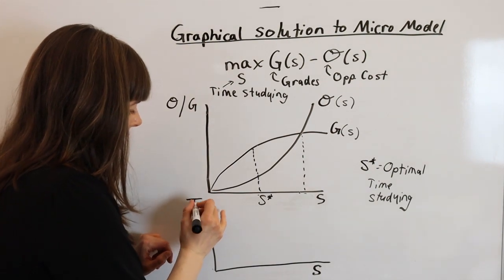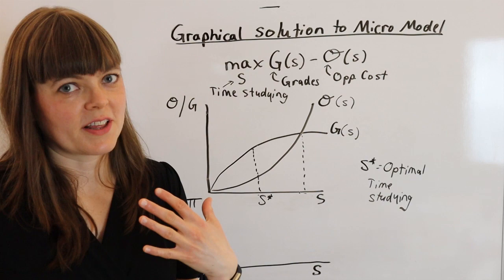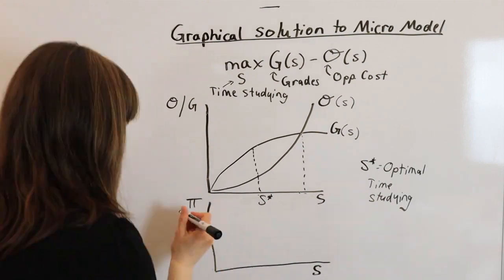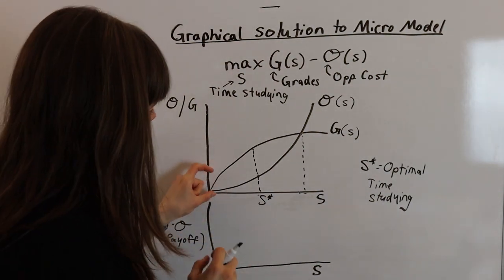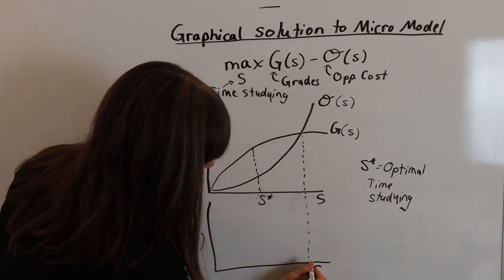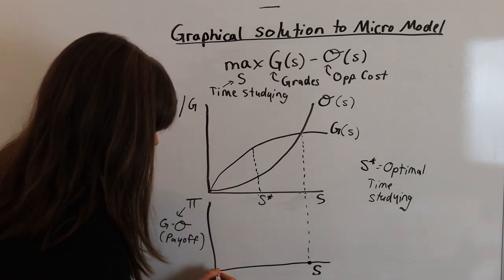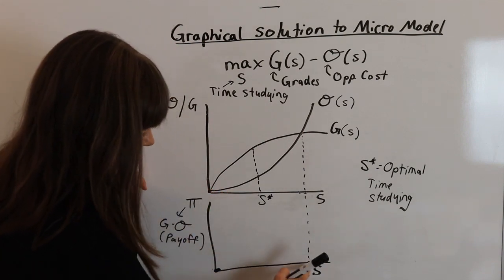So I'm going to let pi equal the payoff function. Pi is basically what I use to represent the whole objective function, total payoff. And that's just the difference between the two. And we know at this point, it's going to be zero. At this point, it's also zero. So here are two different points on our graph.